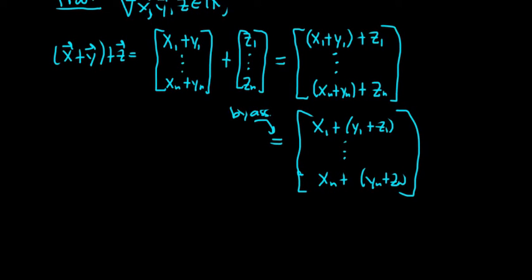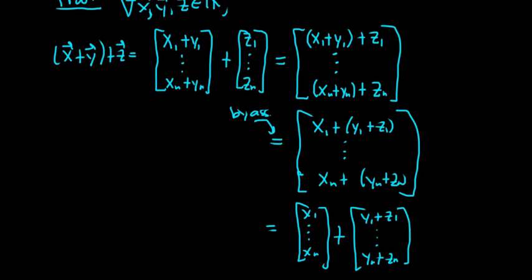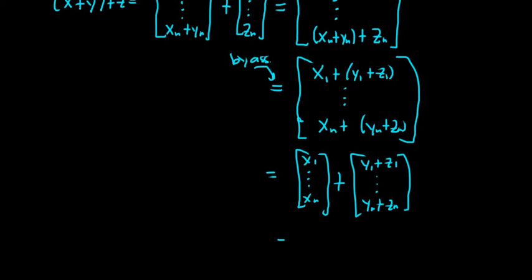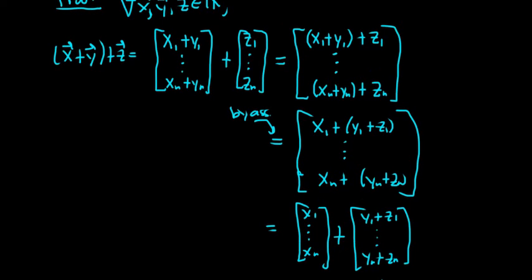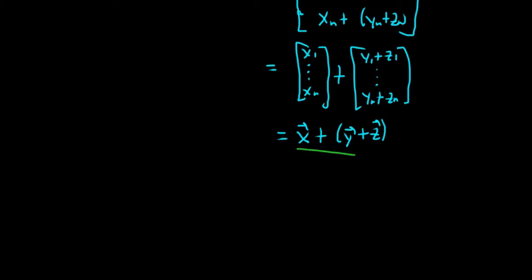And then using the definition of vector addition, this becomes x1... xn plus. And then here we have this other vector, y1 plus z1. But now we can drop the parentheses, they're not really necessary. And this first vector here is the vector x. And the second vector here is the vector y plus z, by definition of vector addition. So let me scroll up so you see it. We have that x plus y plus z is equal to x plus y plus z. So that's true for all x, y, z. So we've shown associativity.